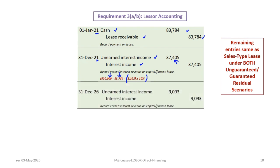Continuing down to 2026, just prior to settlement on January 1, 2027, we record the last interest income entry: debit unearned interest income, credit interest income for $9,093, which is the remaining amount on the amortization schedule. Again, these entries are the same regardless of whether it's a sales type lease and regardless of whether the residual is guaranteed or unguaranteed.